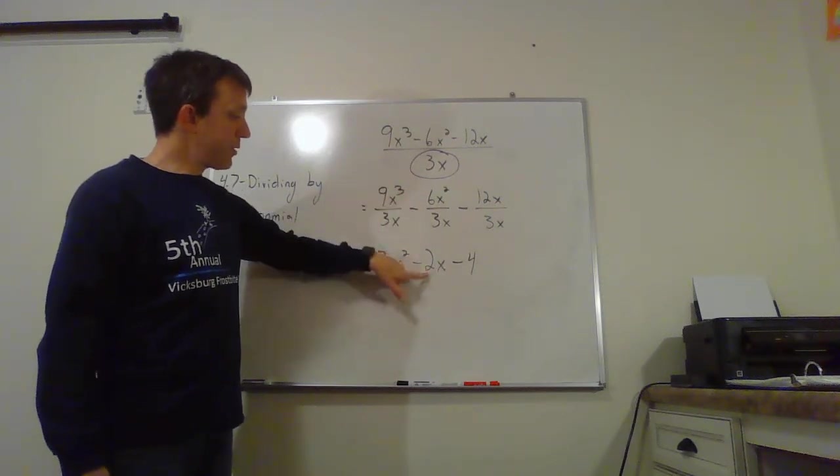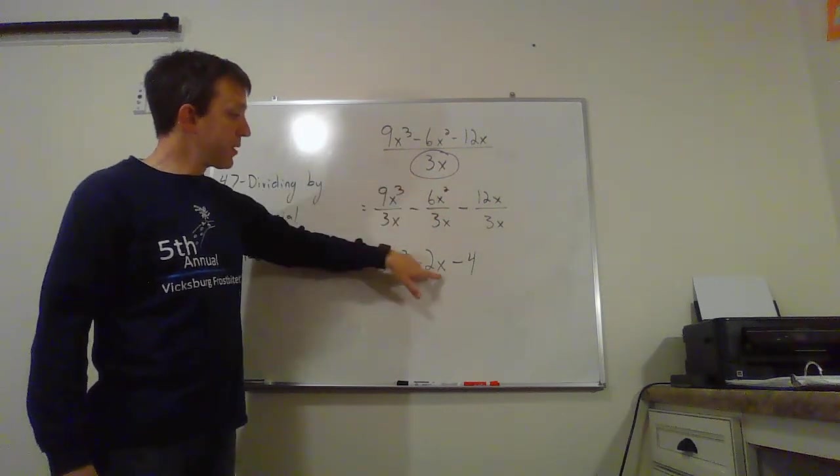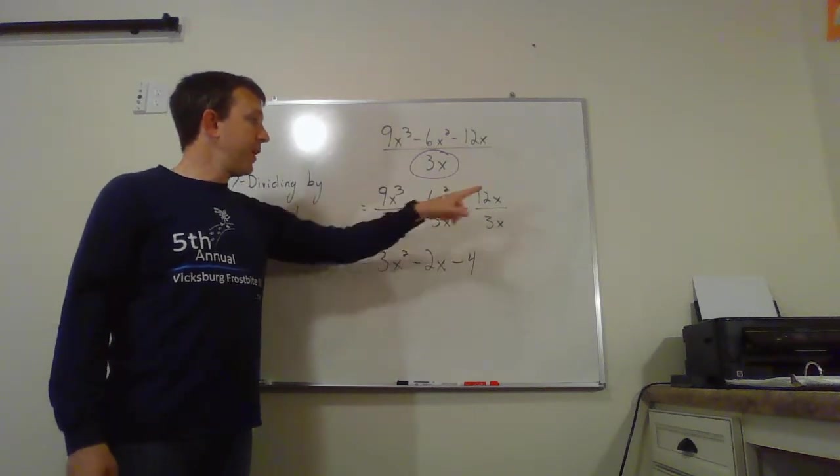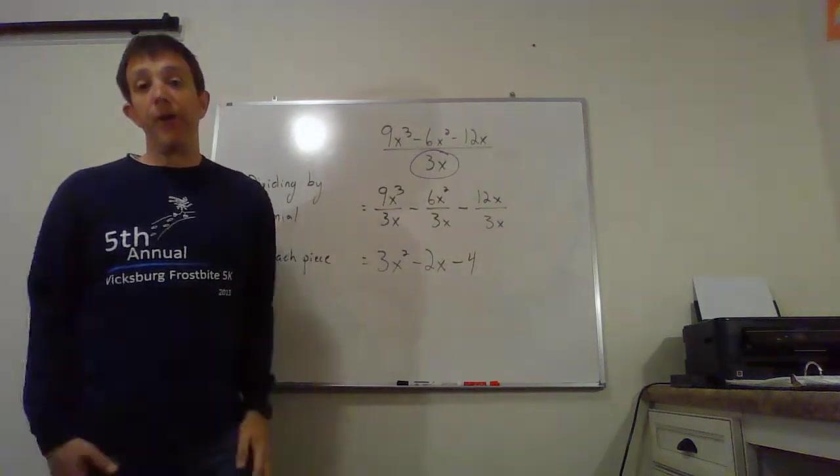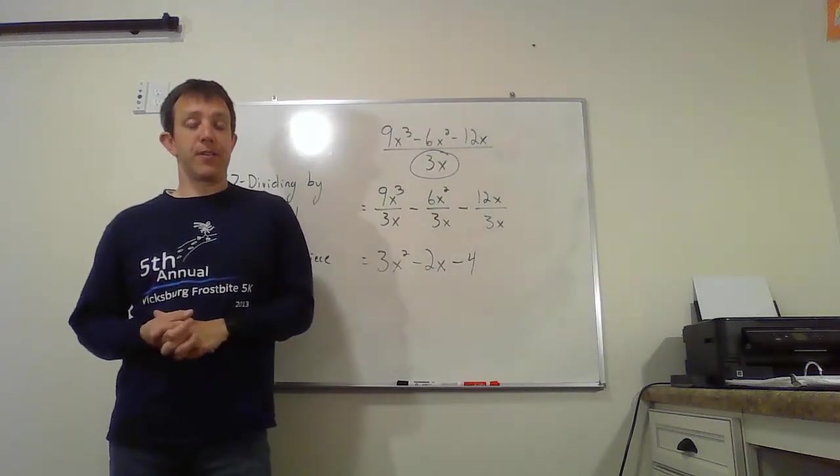Minus sign. 6 divided by 3 is 2. 2 minus 1 gives me just an x, and 12 divided by 3 is 4. So I get a minus 4, and those x's drop out. And really, that's this entire section.